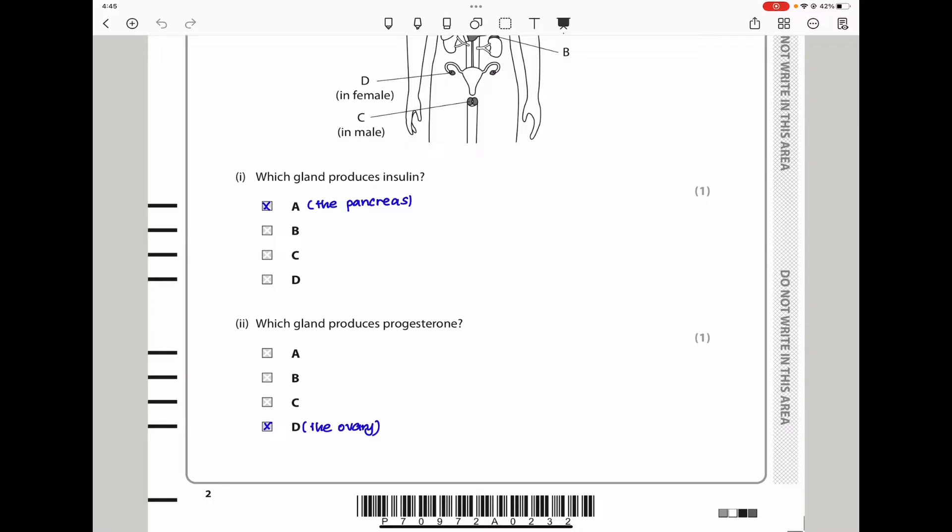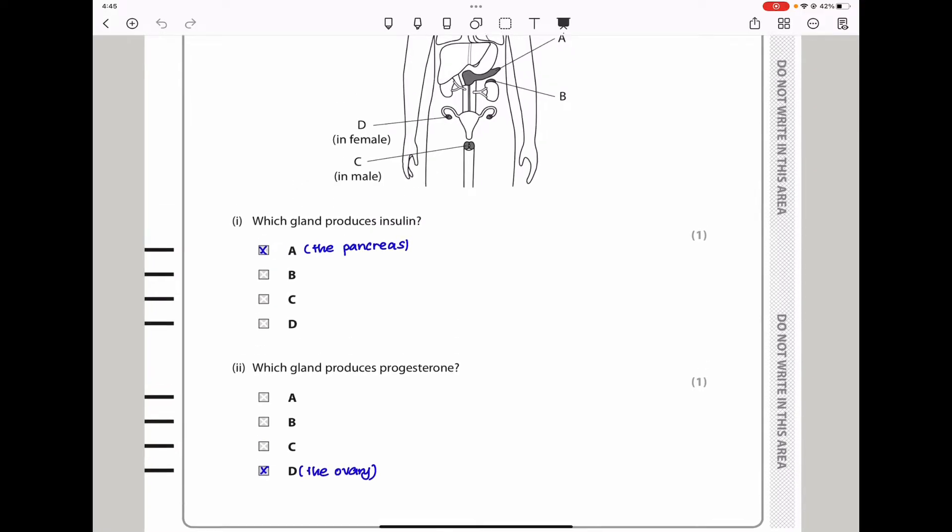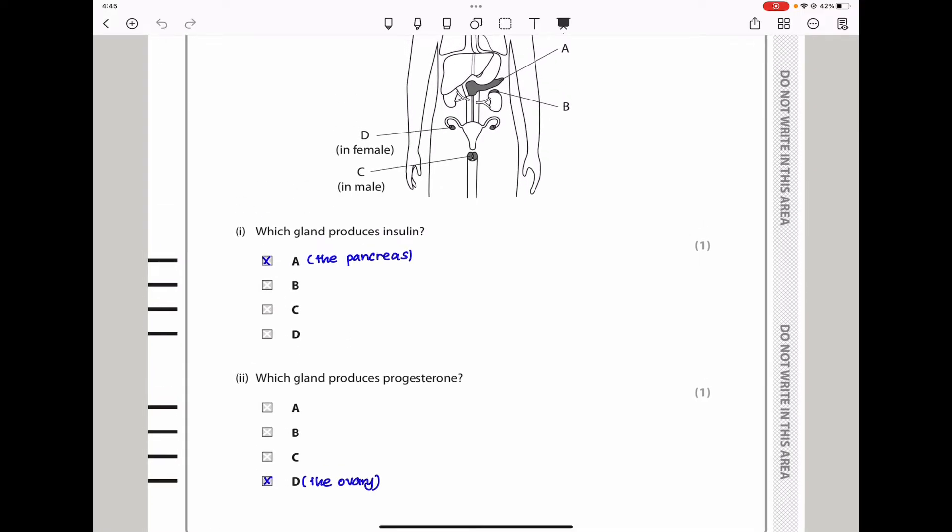The next part says which gland produces progesterone? Progesterone is a hormone produced among females. It is produced by the ovaries, so it should be gland D. The answer here should be D.